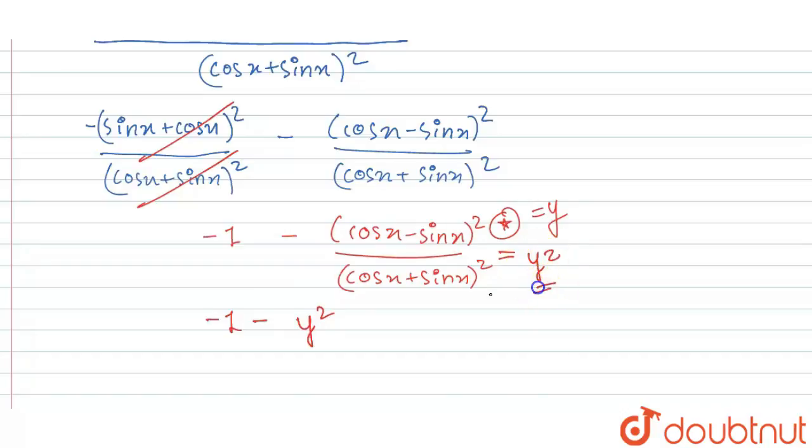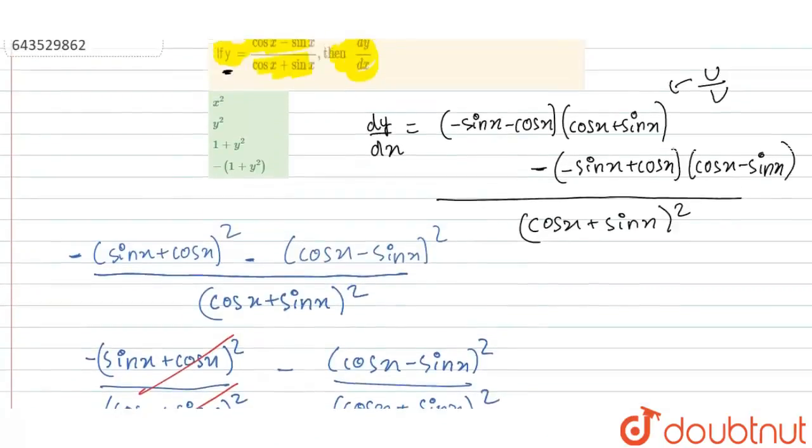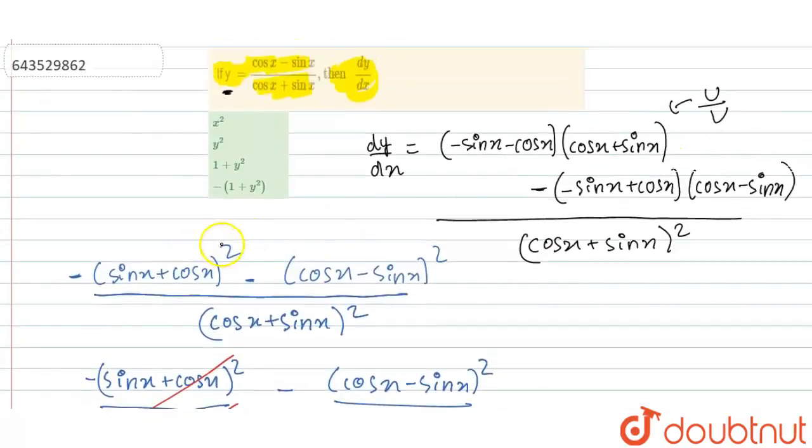So our final answer for this question will be minus one minus y square. Let us check the option. They have taken minus common so our option will be d which is minus of one plus y square. Thank you.